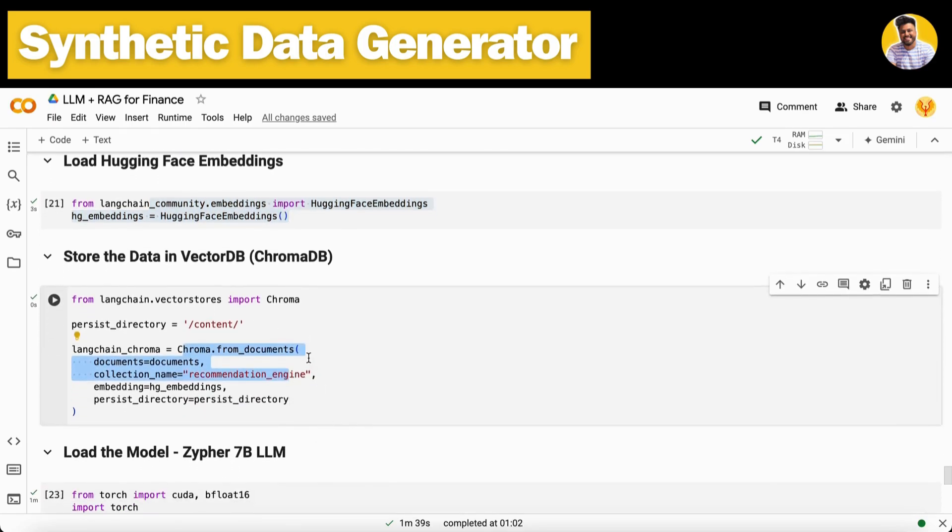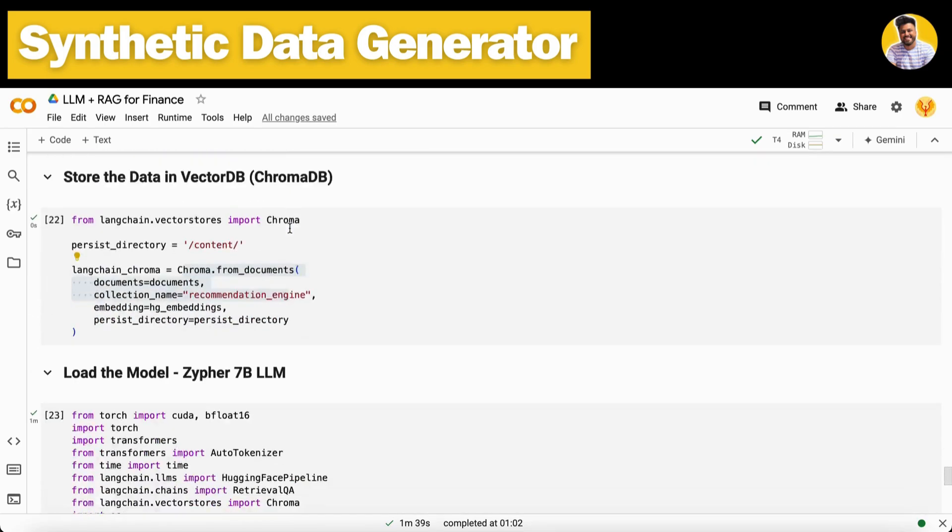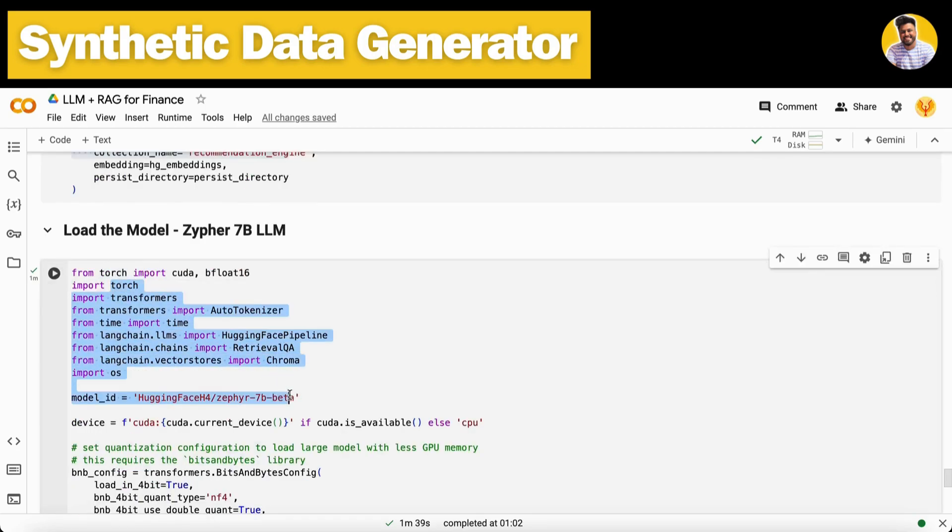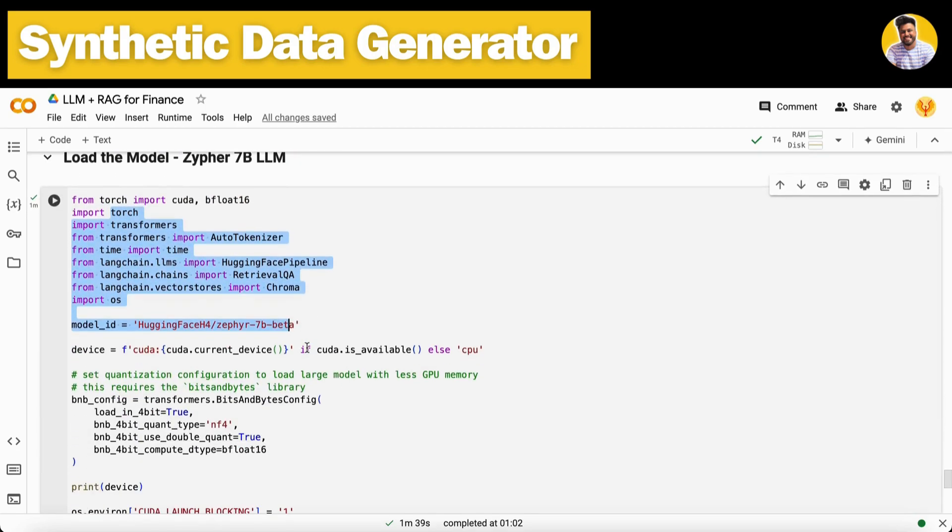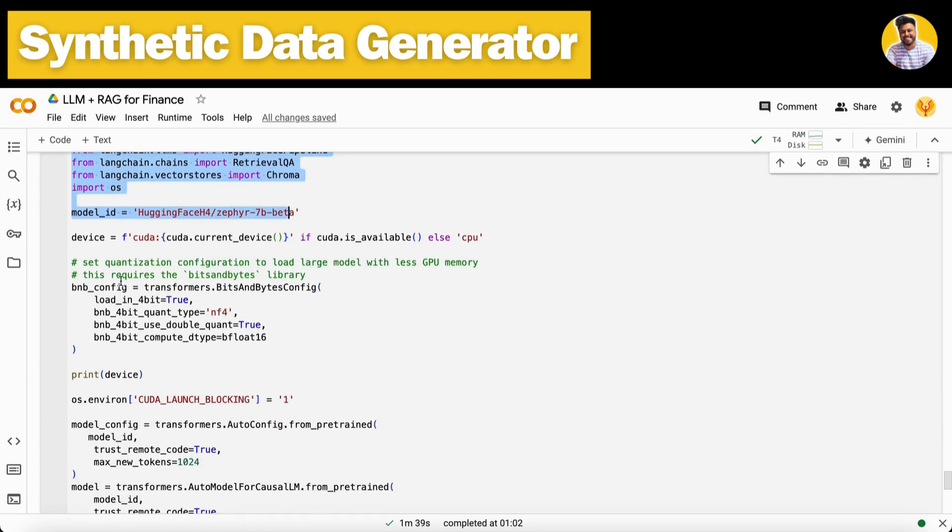I called my Hugging Face embeddings to put it into the vector DB. I use ChromaDB here and put that document format data into ChromaDB so we can use it in our RAG QA chain.